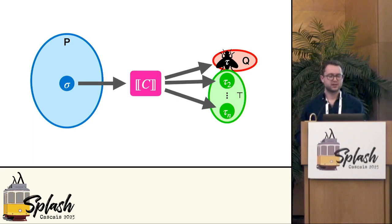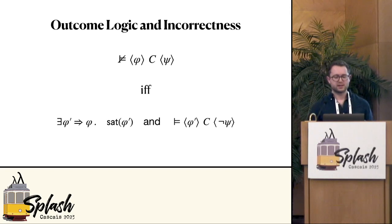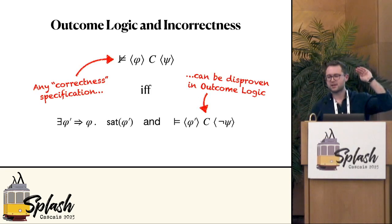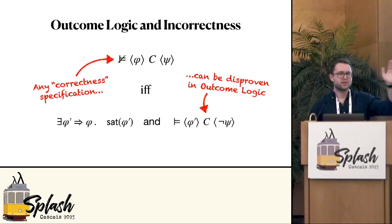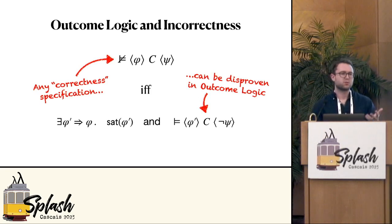We've seen anecdotally that outcome logic can describe bugs, but we also have a more formal result: any specification that's false can be disproven in outcome logic. You can read this theorem in two directions. If you see a triple representing what you want the program to do but it's not semantically valid, then there must be some other outcome logic triple that is valid — and if you prove this other triple, you've disproven the original specification.